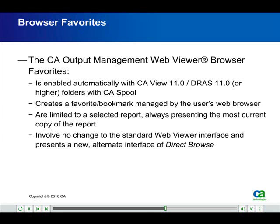The CA Output Management Web Viewer Browser Favorites is enabled automatically with CA View 11.0, DRAS 11.0, or higher, folders with CA Spool. It creates a favorite bookmark managed by the user's web browser, and is limited to a selected report, always presenting the most current copy of the report.